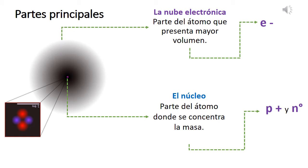Las partes principales del átomo son la nube electrónica, que es la parte del átomo que presenta un mayor volumen y donde se encuentran los electrones, y el núcleo, que es la parte central del átomo donde se concentra la masa y donde se encuentran los protones y los neutrones.